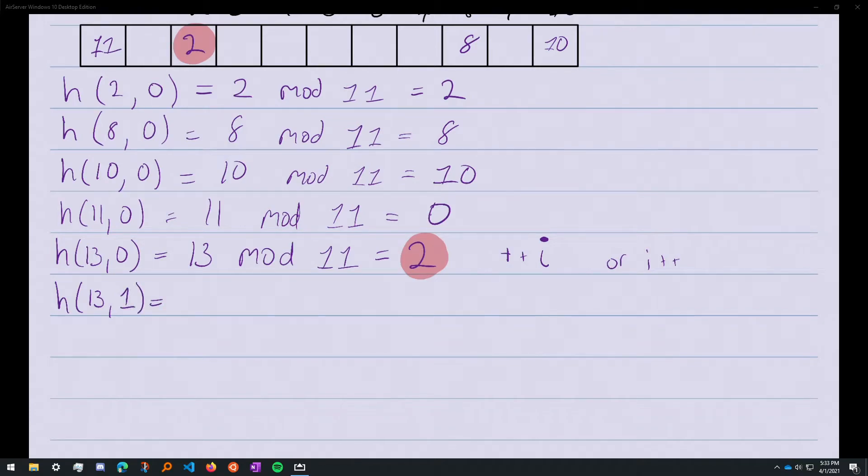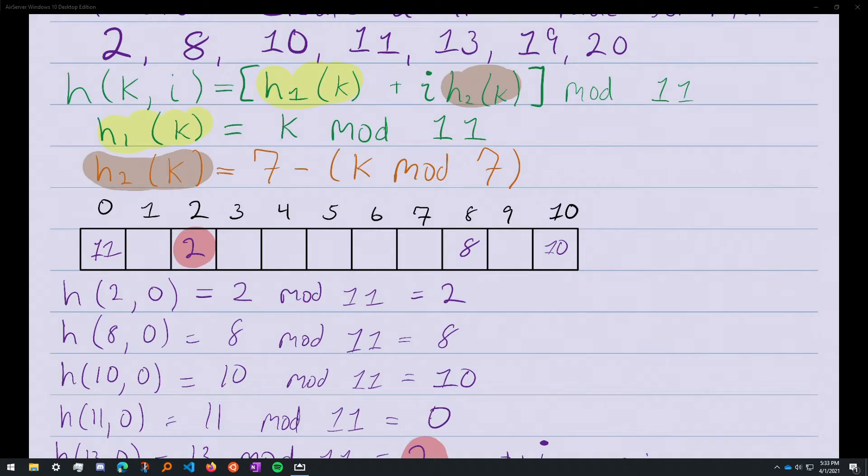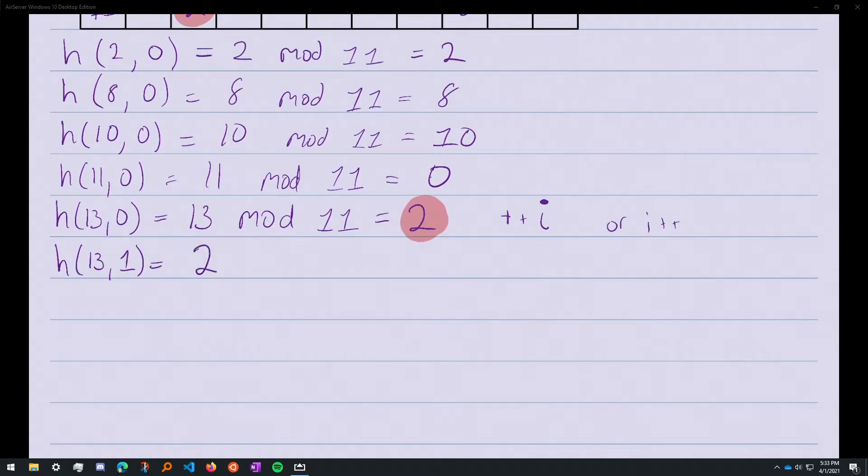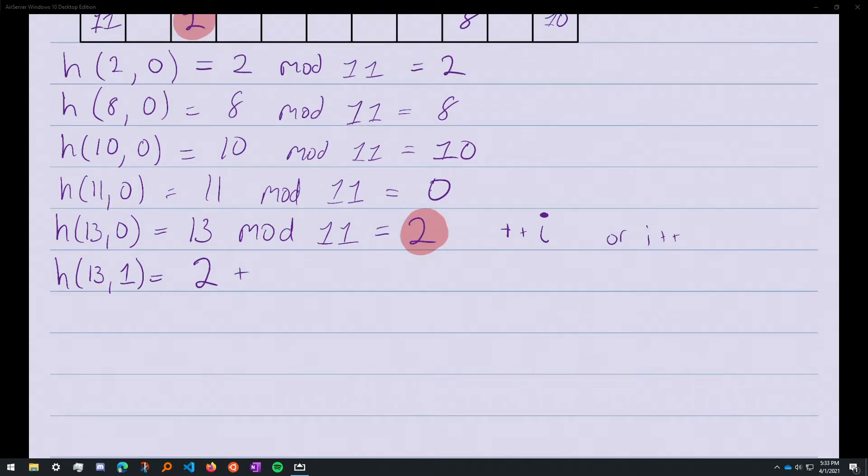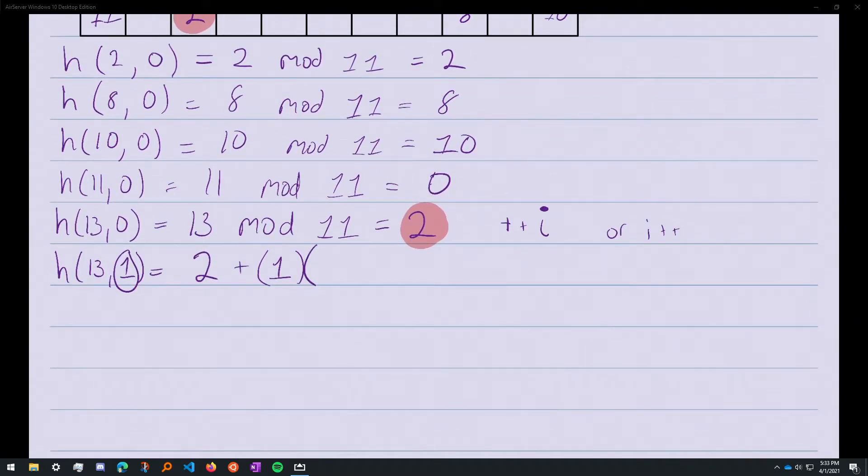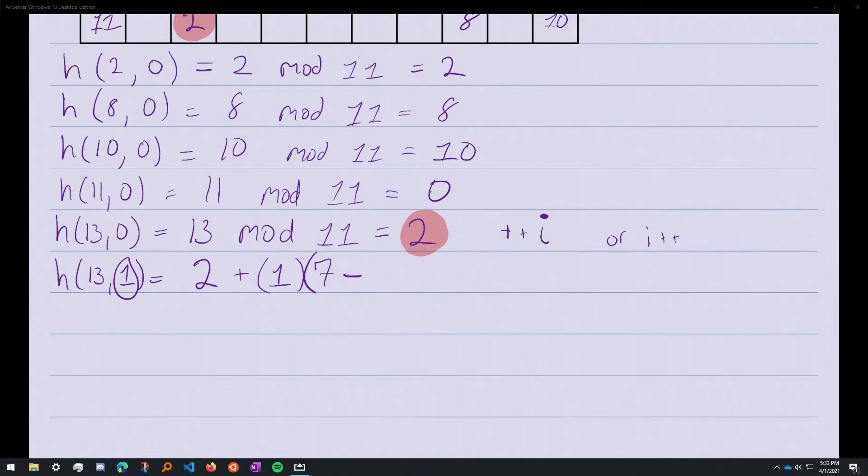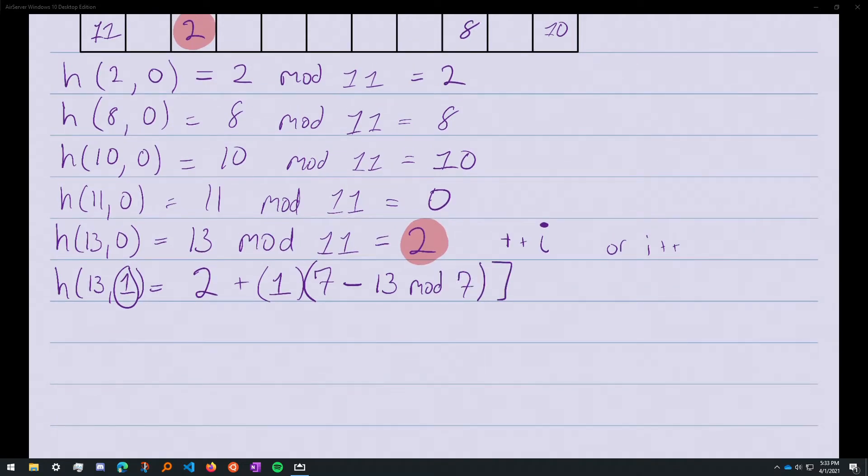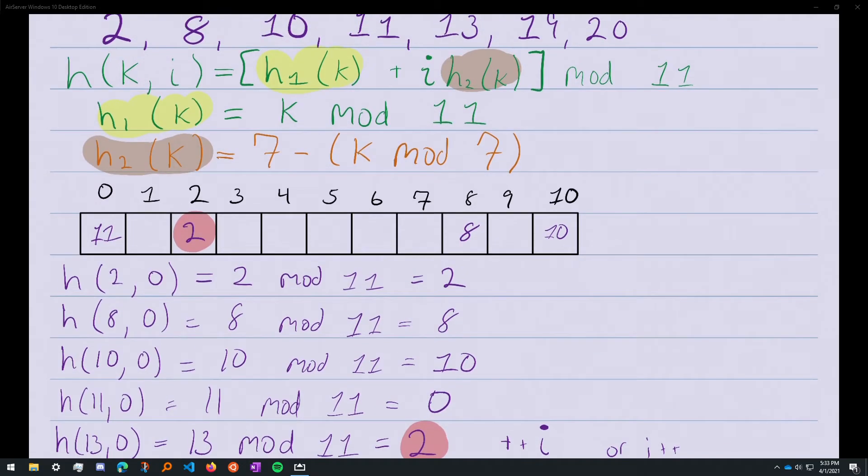Now our function changes a little. We bring down the value from i=0 because we're still going to do 13 mod 11. We bring that value down, and to it we add i, which is 1, times our h2 function. What is h2? 7 minus k mod 7. That will be 7 minus 13 mod 7, and all of that we mod with the table size.